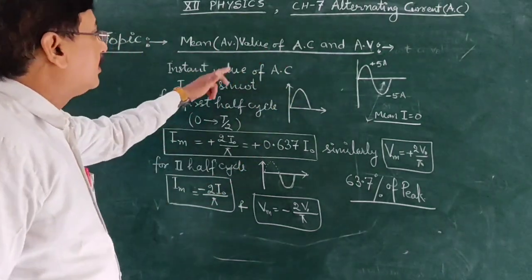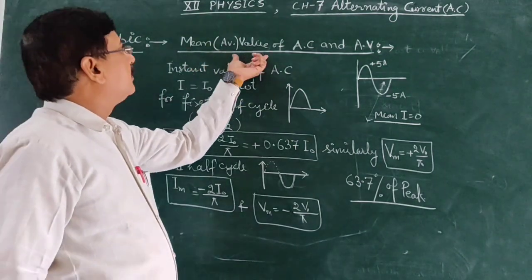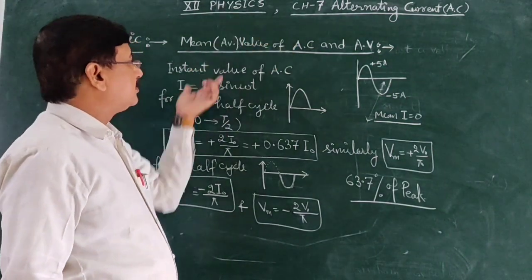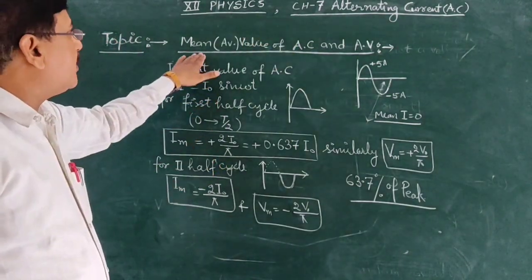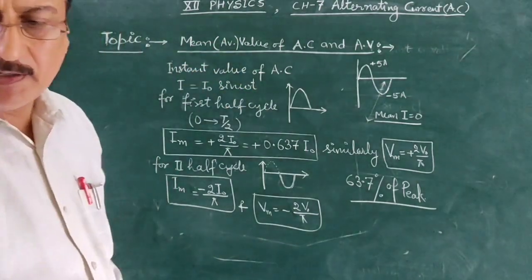Dear students, now we will talk about chapter 7 AC, which is the mean AC value, alternating value.